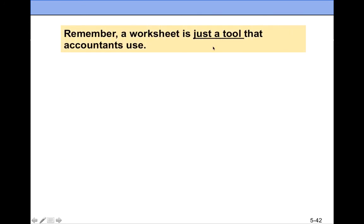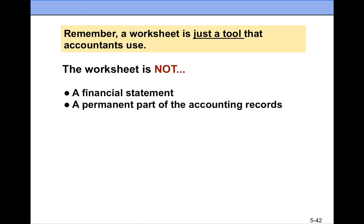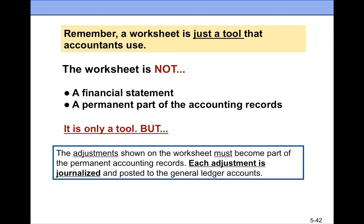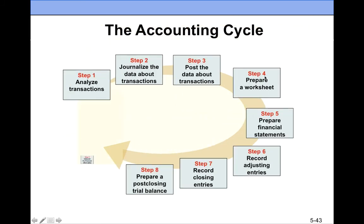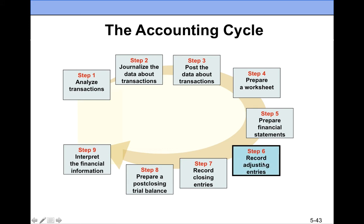A worksheet is just a tool that accountants use — it's not an official financial statement and not a permanent part of the accounts and records. But the adjustments we calculated on the worksheet must now become part of the permanent accounts and records. Anytime I want anything to become part of the accounts and records, I have to journalize them and post them to the ledger, because the ledger accounts are not yet updated.